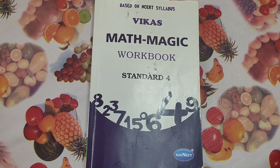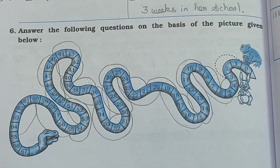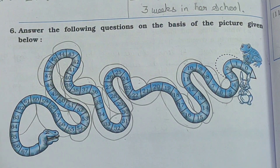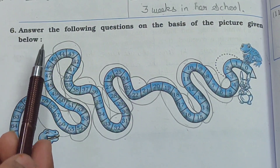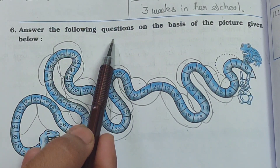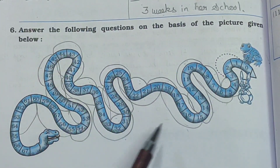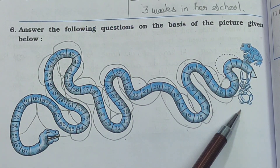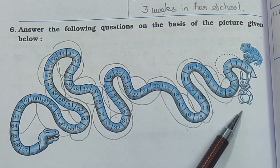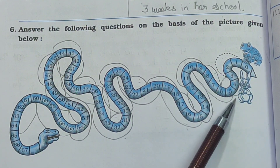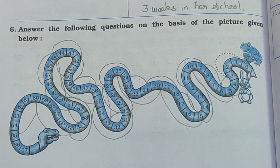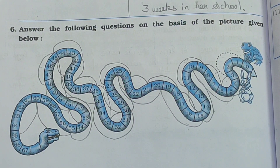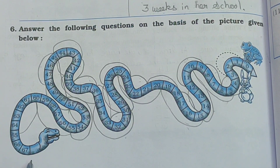Hello students, how are you all? I hope you all are fine at home. Today we will see Mathemagic Workbook Standard Fourth, page number 158. We will see Main 6. In the previous video we completed Main 5, so today we will start from Main 6. First of all, read the question: answer the following questions on the basis of the picture given below. In the picture, one snake is given, one frog, and below a rabbit. Both the frog and rabbit jump. The questions are on page number 159.